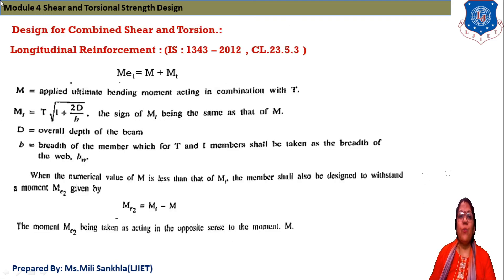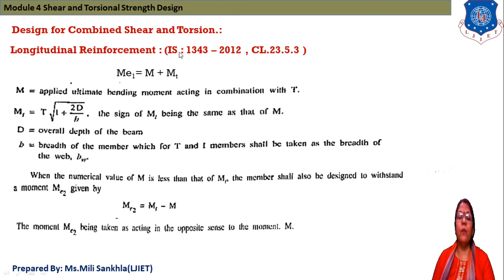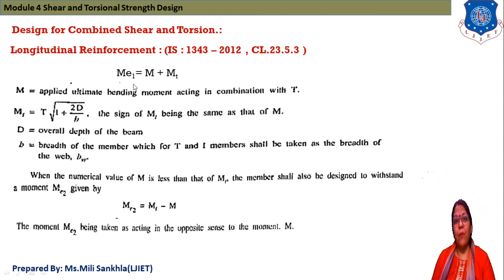Next, we discuss the design for combined shear and torsion. We design a prestressed concrete beam for shear and torsion. First, we apply longitudinal reinforcement as given in IS 1343-2012, Clause 23.5.3. We find ME1 = M + MT.